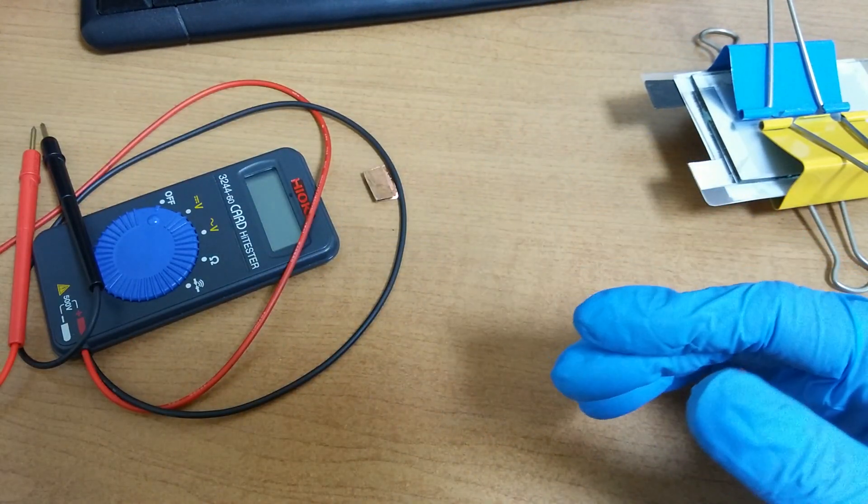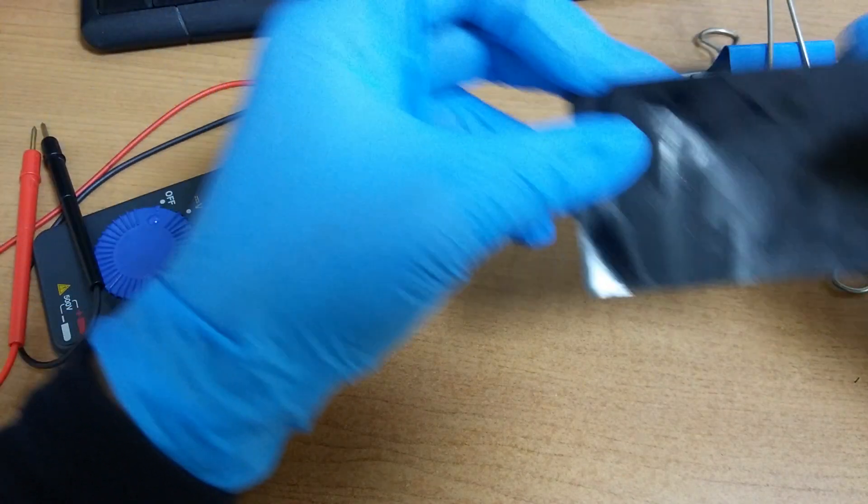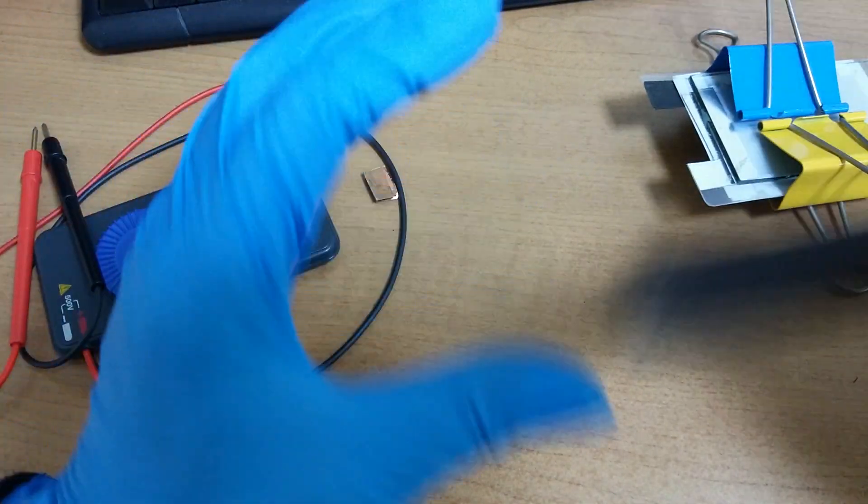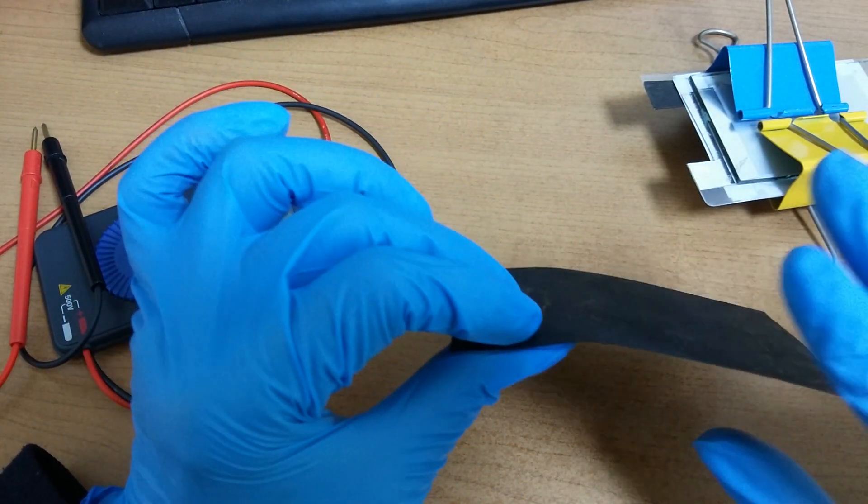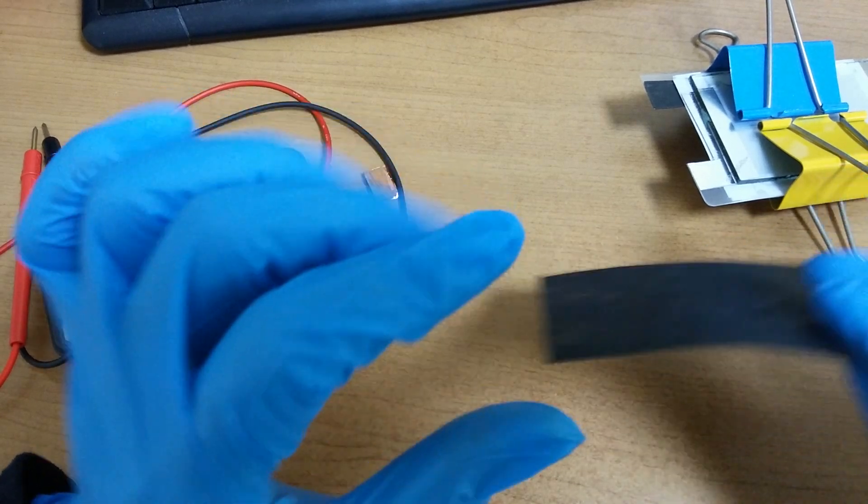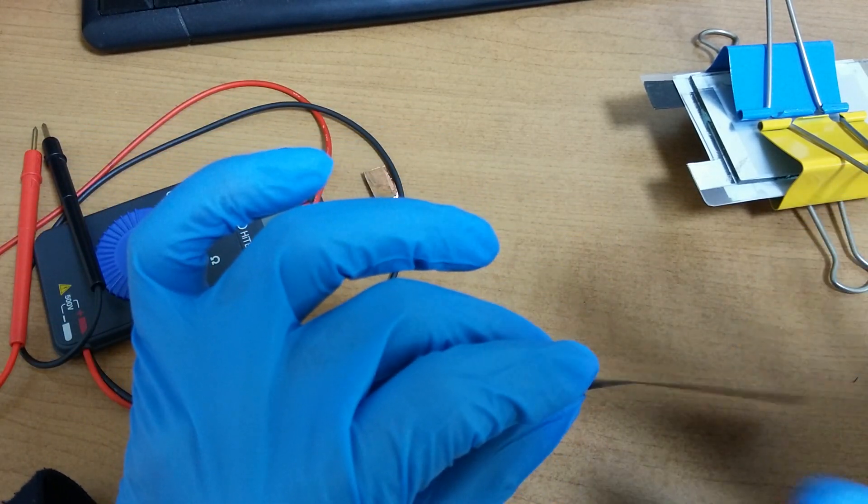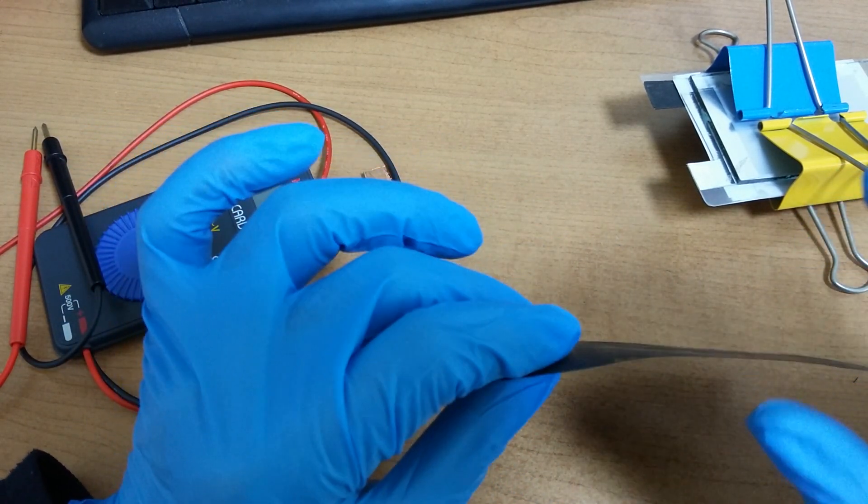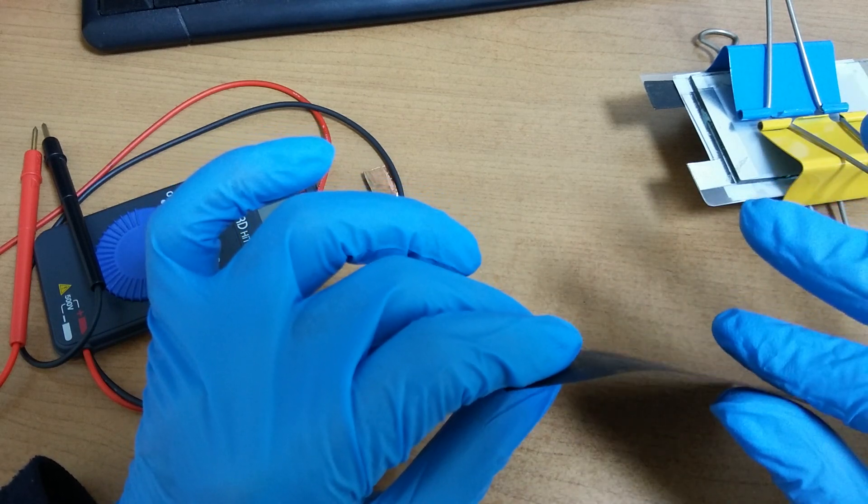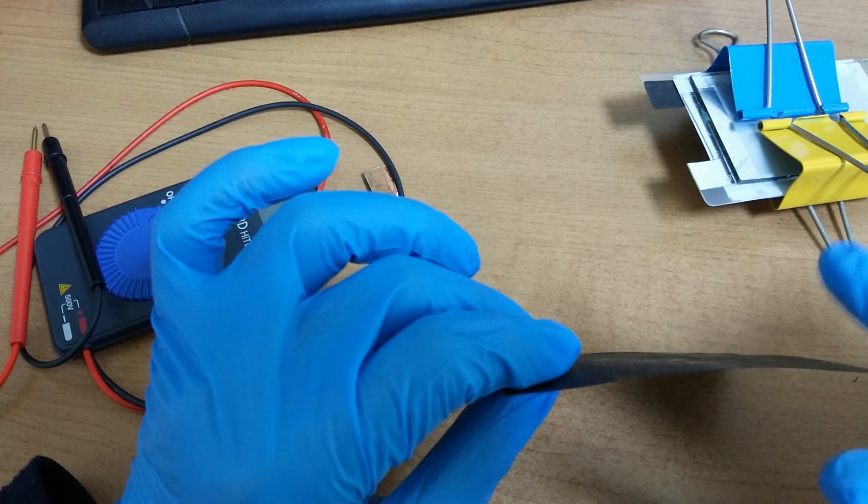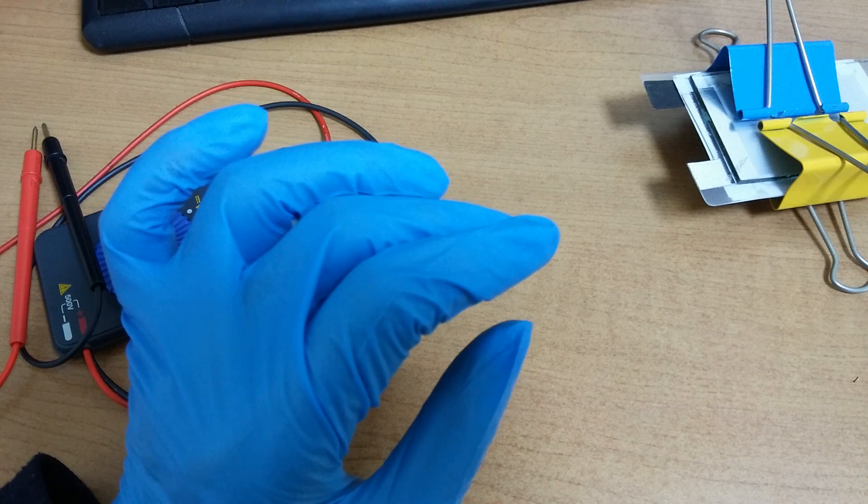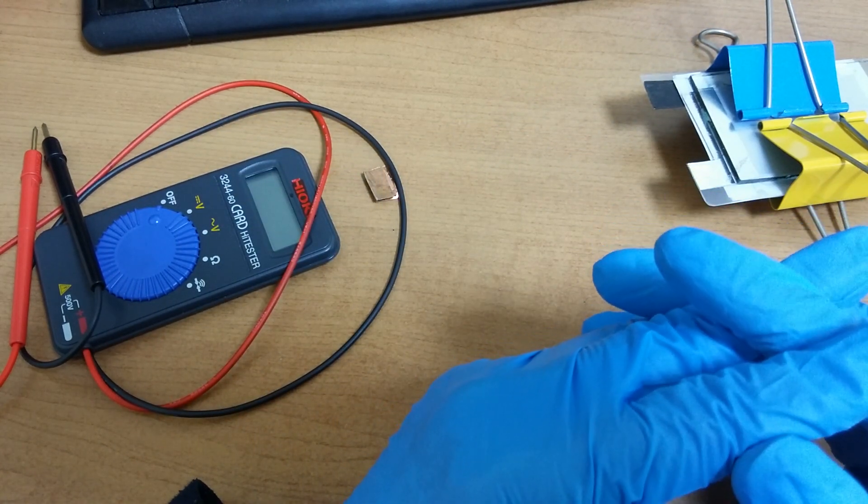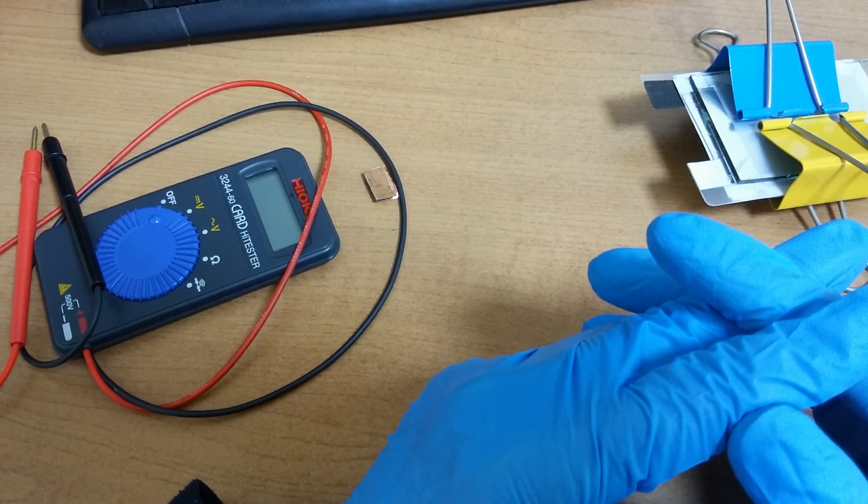But this time I doped this paper with iodine. And the result is good. It was one layer and the initial voltage was 3.1V. And the amperage also looks very satisfactory.